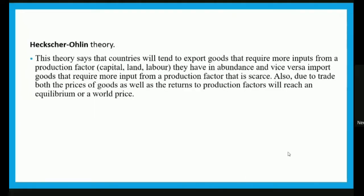Heckscher and Ohlin's theory states that countries will tend to export goods that require more inputs from a production factor — capital, land, or labor — that they have in abundance, and vice versa, importing goods that require more input of a production factor that is scarce. Due to trade, both the prices of goods and returns to production factors will reach an equilibrium or world price.